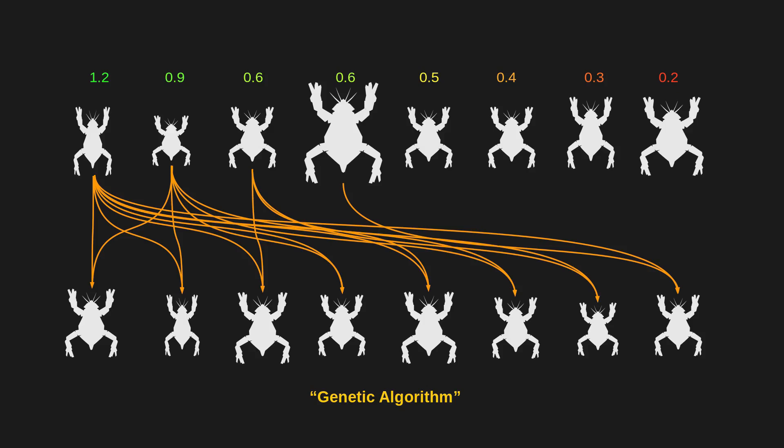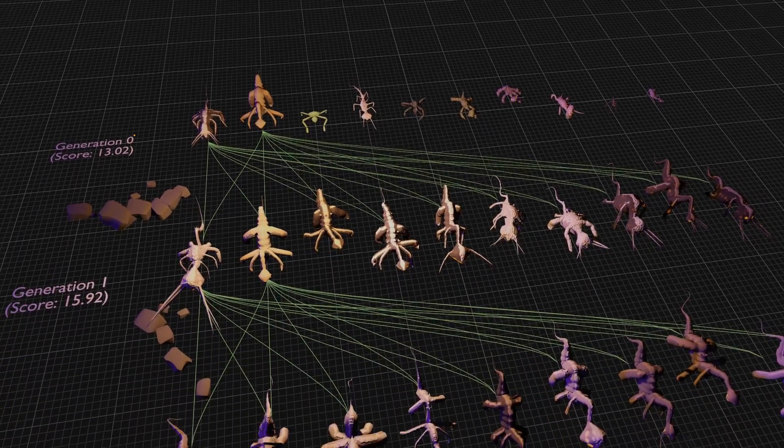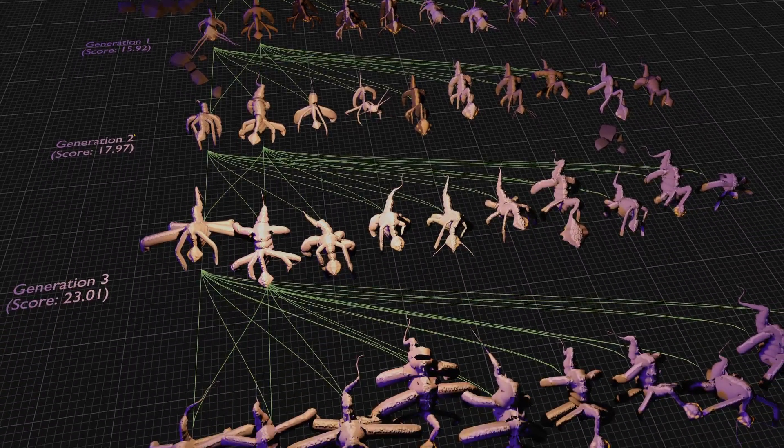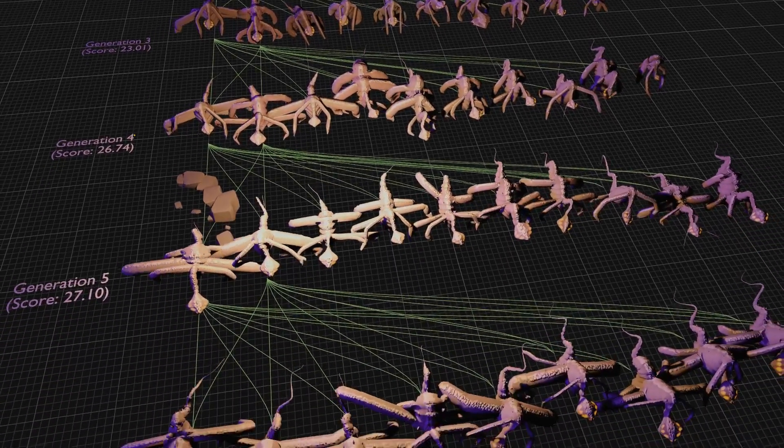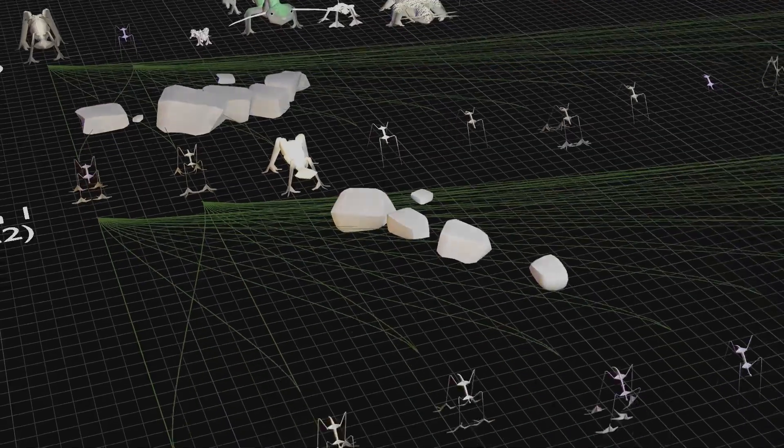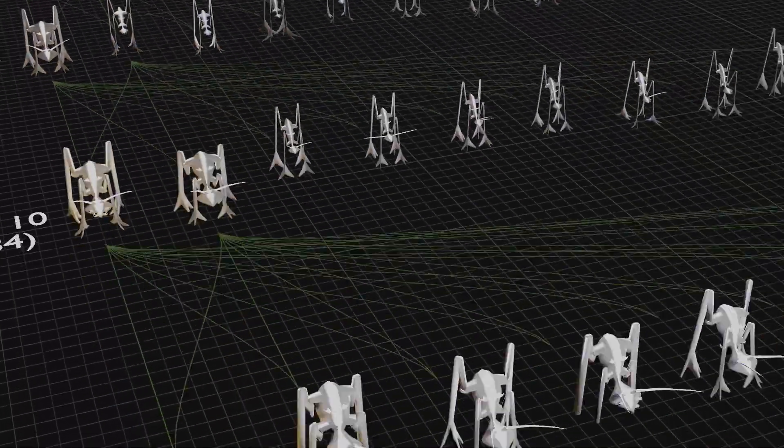Now, the question is, what should we use as the metric or scoring function? Well, we could start by choosing the sum of the length of all of the legs as a scoring function. As you can see, this encourages creatures to have long or many legs. Or we could choose a function that encourages short torsos, long hind legs and short front legs.